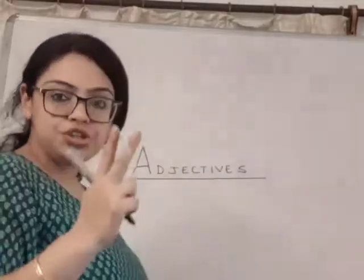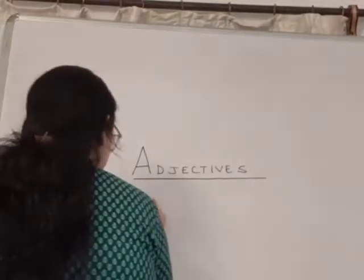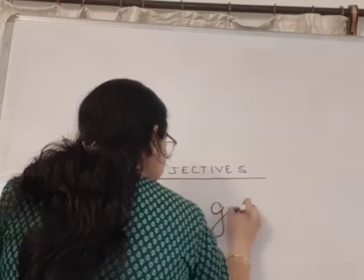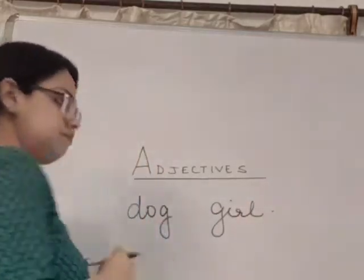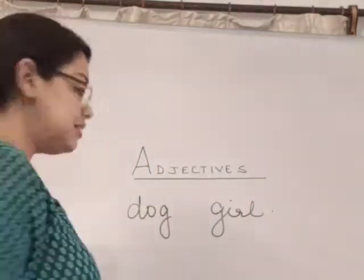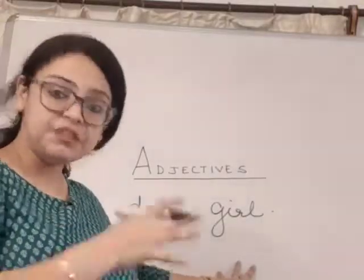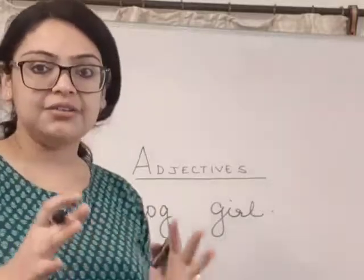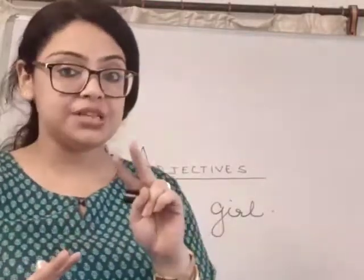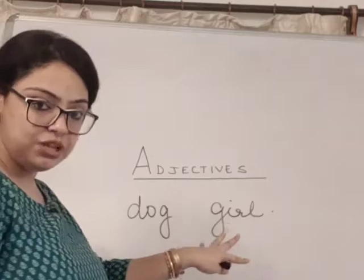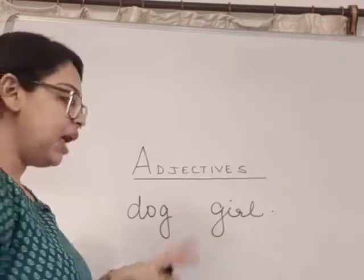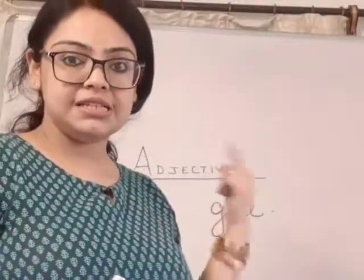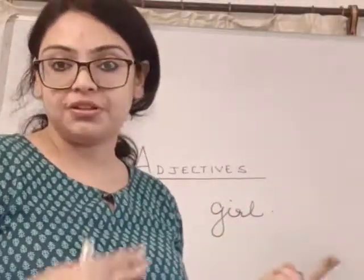We are going to use two nouns — dog and girl. These are the two basic nouns I'll use in my first section, where I'll give you the basic adjectives. Now, adjectives are of two types. Before we move on to the types, I am going to give you a very simple example. The two types are: one is a determiner, and the other one is a descriptive adjective.